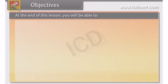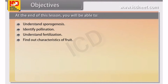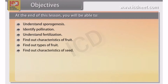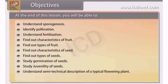At the end of this lesson you will be able to understand sporogenesis, identify pollination, understand fertilization, find out characteristics and types of fruit, find out characteristics and types of seed, study germination and juvenility of seeds, understand semi-technical description of a typical flowering plant, and study description of some important families.